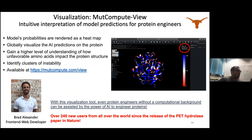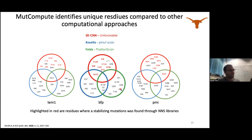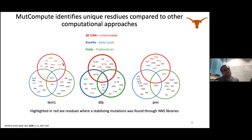When we first made this model, we were working with Ross Thayer, now a professor at Rice, who wanted to validate it on three different proteins — data available in our ACS Synthetic Biology paper. We wanted to see how well the model's mispredictions correlated with other computational tools like Rosetta and Foldax. The mispredictions from our 3D CNNs were very different from Rosetta and Foldax, which is interesting because it represents a new source of orthogonal information for protein engineering. The ones in red were positions where experimental mutation actually found an improved amino acid.